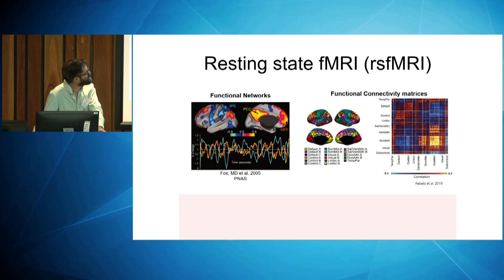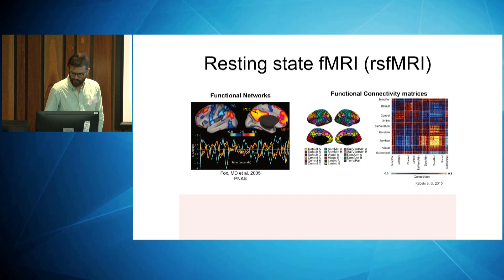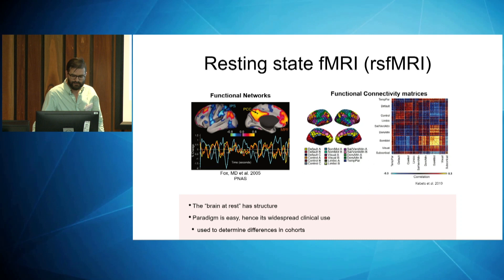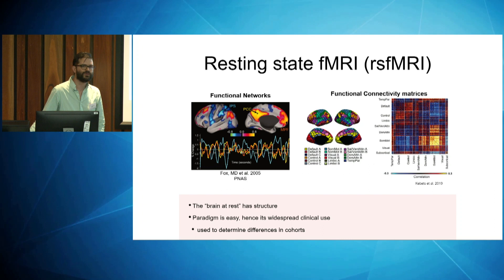You put a seed in the PCC — posterior cingulate cortex — and what you find is correlated networks which happen just at rest without any task. You also find anti-correlated networks. Another way to look at this is to take your cortex and split it into parcellations — chunks in terms of different regions like the visual area, somatic sensory area — and generate a big functional connectivity matrix. A take-home is that the brain has structure. The paradigm is easy — someone resting in a scanner — so it has widespread clinical use and has been used to determine differences in cohorts such as bipolar disorder, controls, and schizophrenia.